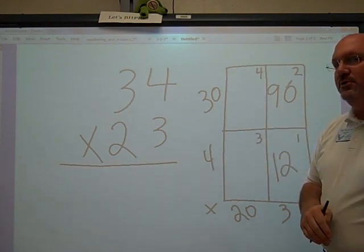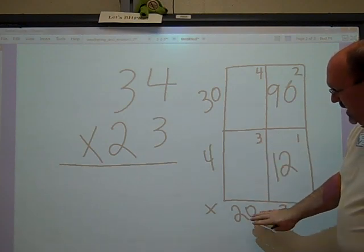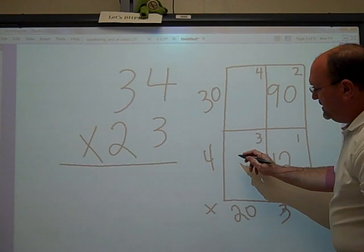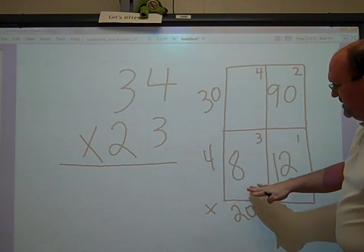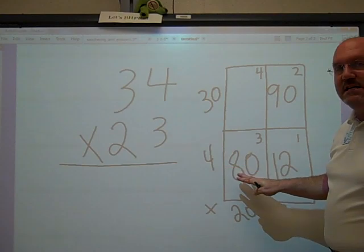That's an easy way to remember. Now we move to box number 3. We have 20, or 2, times 4 is 8. Stamp that 0 right there. So 20 times 4 is 80.